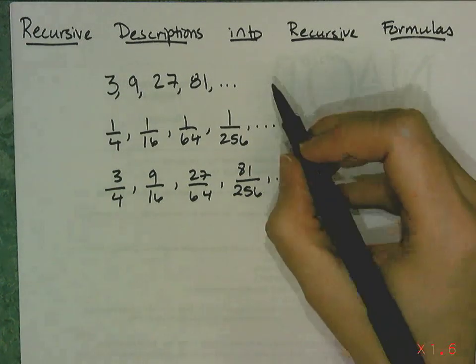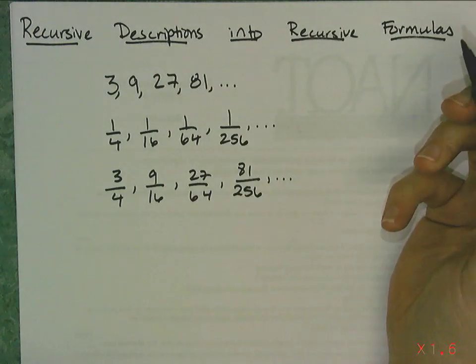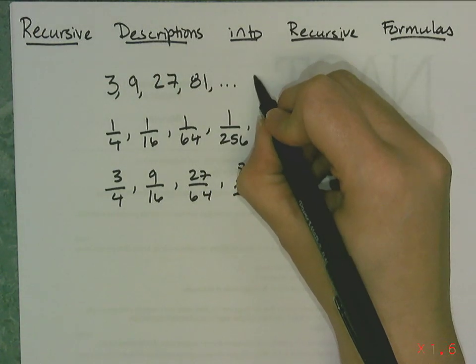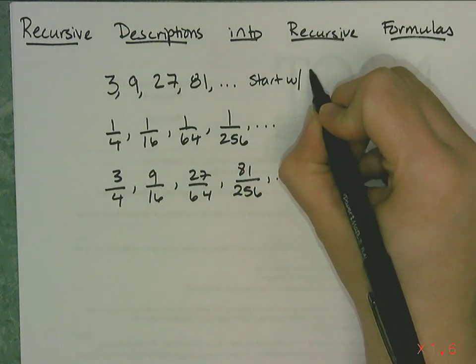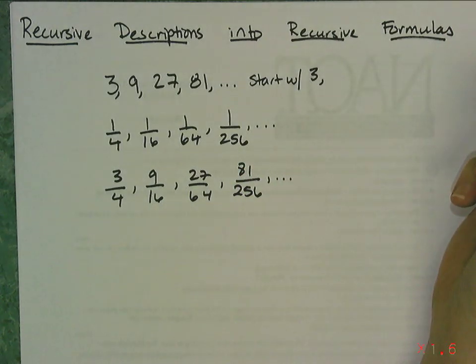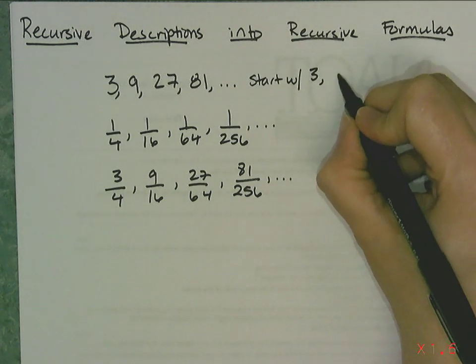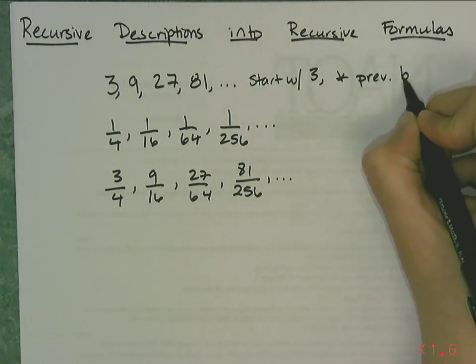We had to write recursive descriptions for these things in sentence format. Remember in class we said you had to have a start with, and in this case it was 3, and then the procedure to find the next term. In this case it's multiply the previous by 3.